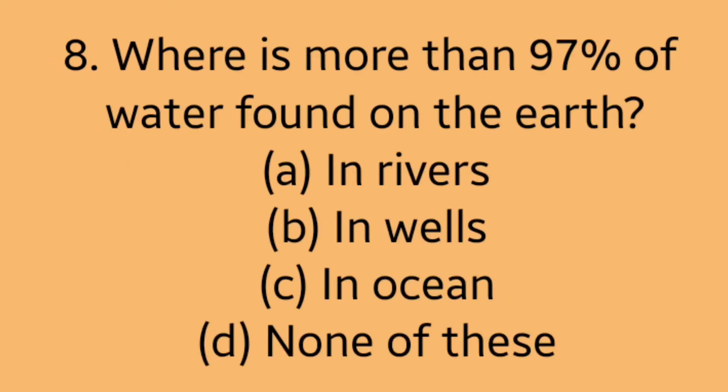Question 8: Where is more than 97% of water found on the earth? Option A: in rivers. Option B: in wells. Option C: in ocean. Option D: none of these. Answer is Option C, in ocean.